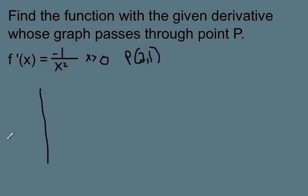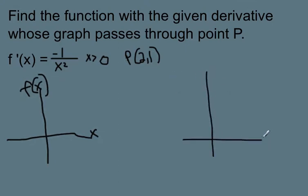Over here I'm going to graph x, and then eventually I will graph f of x. And then I'm also going to graph the derivative over here. So the derivative of the function we know is negative 1 over x squared. Let's get a graph.